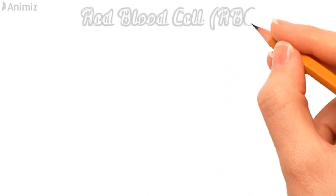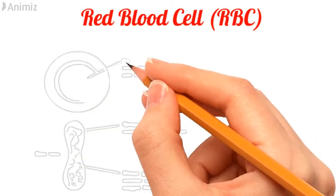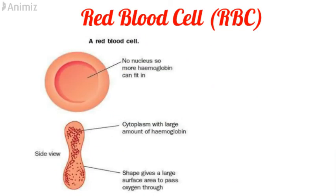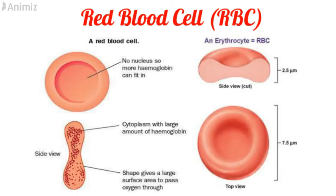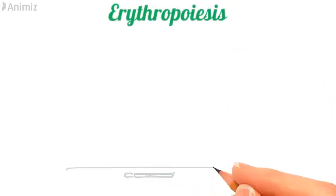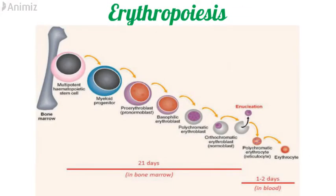The second component is red blood cells, which are also called erythrocytes. They don't have a nucleus and they are biconcave in shape, meaning they are thinner at the center and thicker at the periphery. This shape and absence of a nucleus allows them to accumulate more hemoglobin so that more oxygen can be transferred to the cells. The thickness of an RBC is 2.5 micrometers and the diameter is 7.5 micrometers. The process of origin, development and maturation of the red blood cell is called erythropoiesis. It all starts in the bone marrow with a multipotent hematopoietic stem cell.